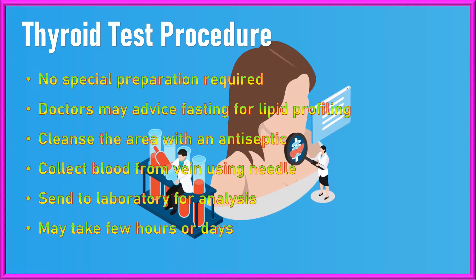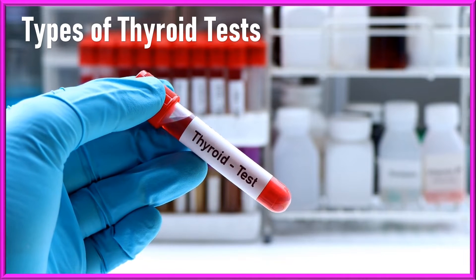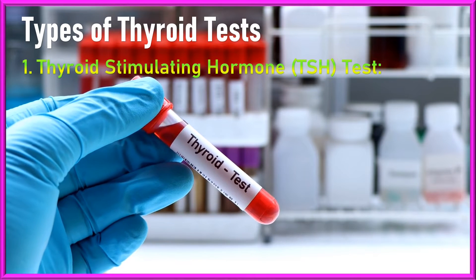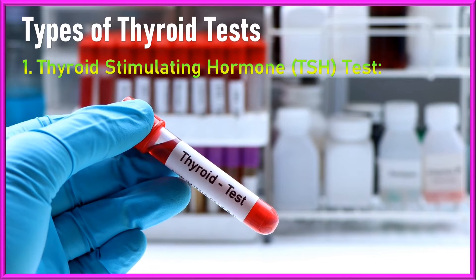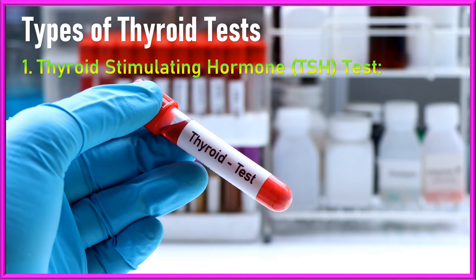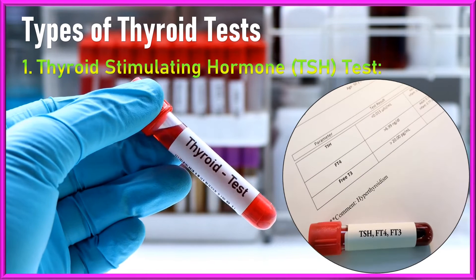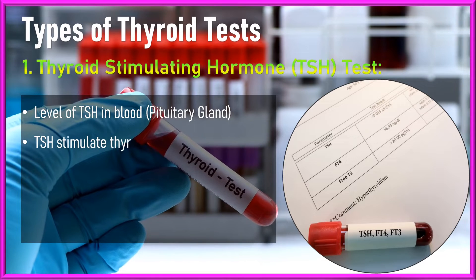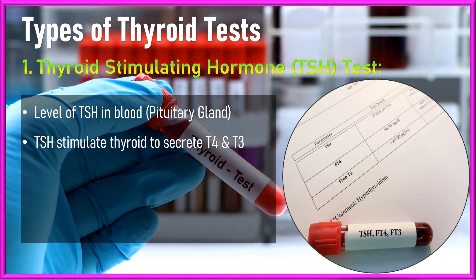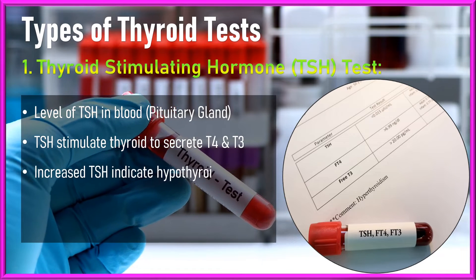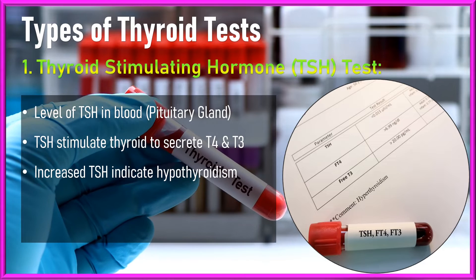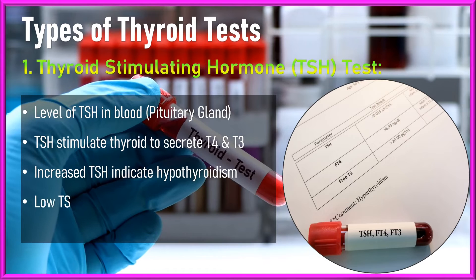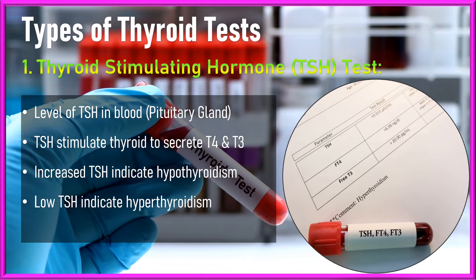There are several thyroid tests available, each serving a specific purpose. The most common ones include: Number one, the TSH test — thyroid stimulating hormone test. This test measures the level of TSH, a hormone produced by the pituitary gland, in the blood. TSH stimulates the thyroid gland to produce T4 and T3. Elevated TSH levels typically indicate an underactive thyroid, meaning hypothyroidism.